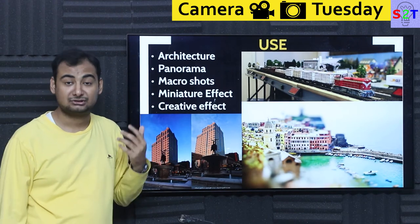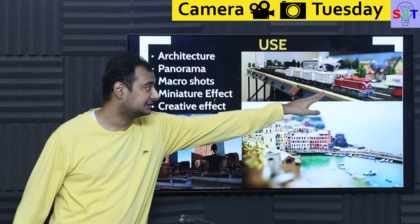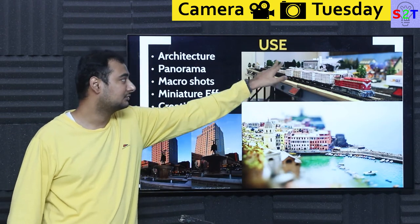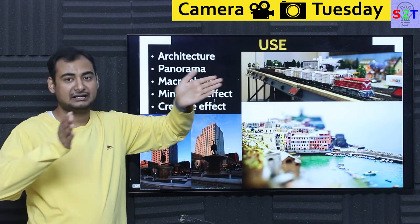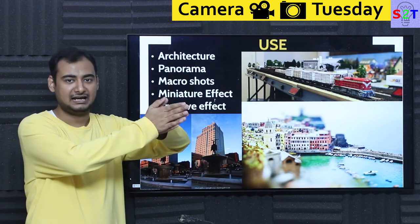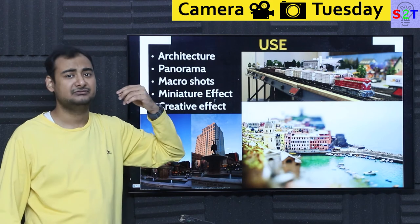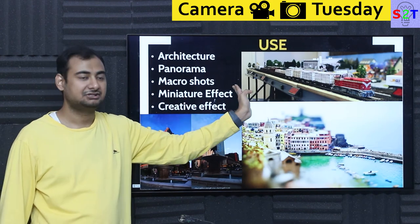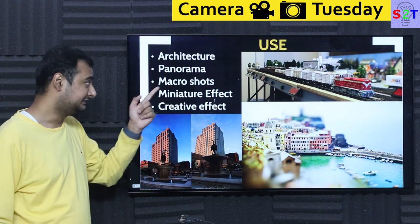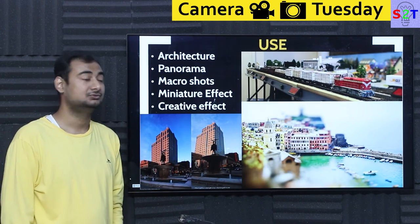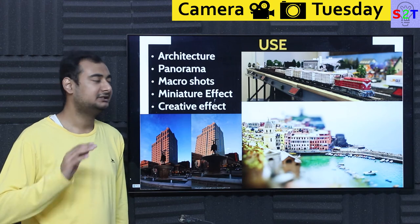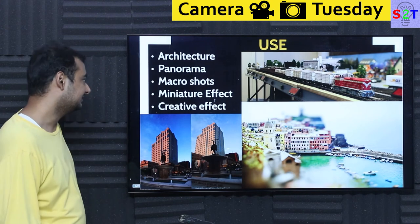Then you have macro shots. Macro shots present a big problem: either this part is in focus, or that part, or the other part. Or you can take multiple in-focus slices and focus-stack them in software — very expensive and very time-consuming. Or you just have a tilt-shift lens, tilt the focal plane like this, and done, go home. And it cannot be replicated by any software to this degree, no matter what you do.